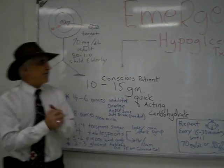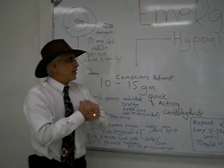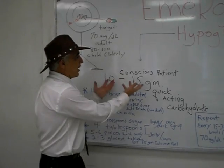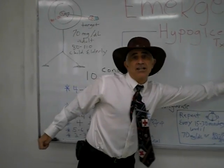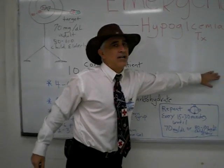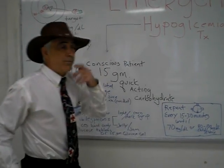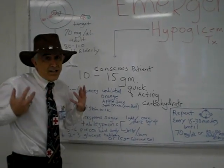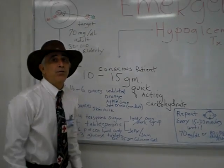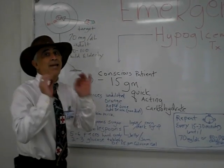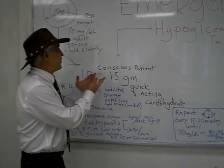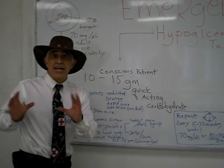We have to divide by type of patient. We have two types: our conscious patient and our unconscious patient. What we want to do is get that blood sugar back up — and fast. If they're conscious, we don't have to worry about aspiration, so we'll choose that oral route.